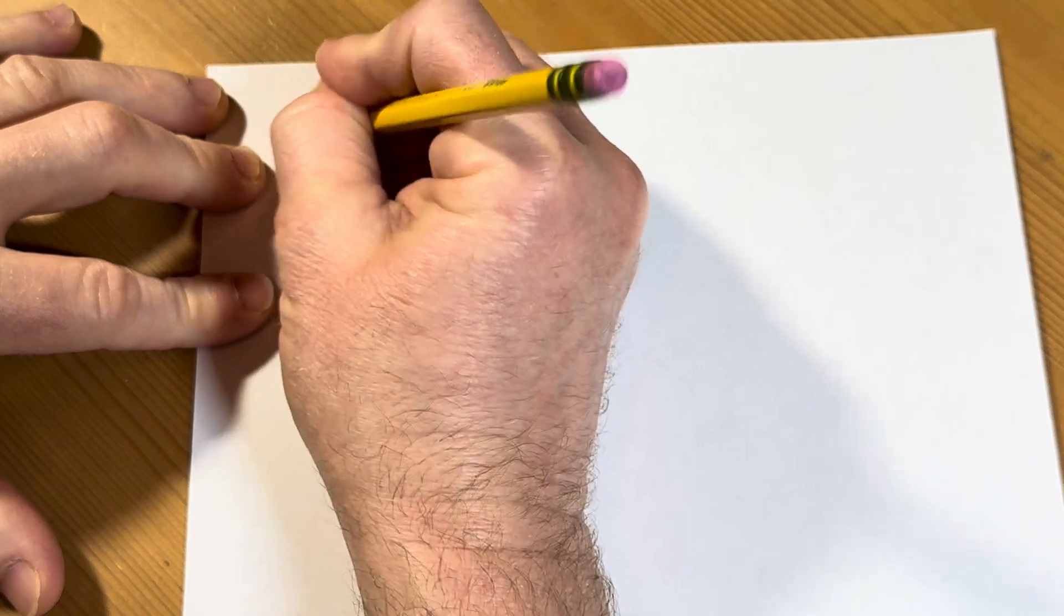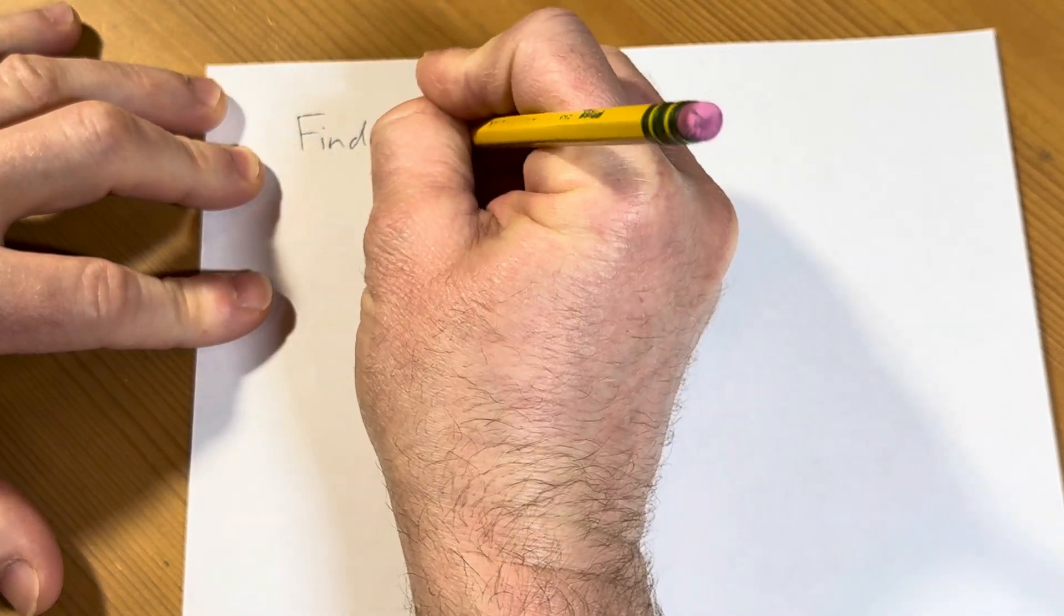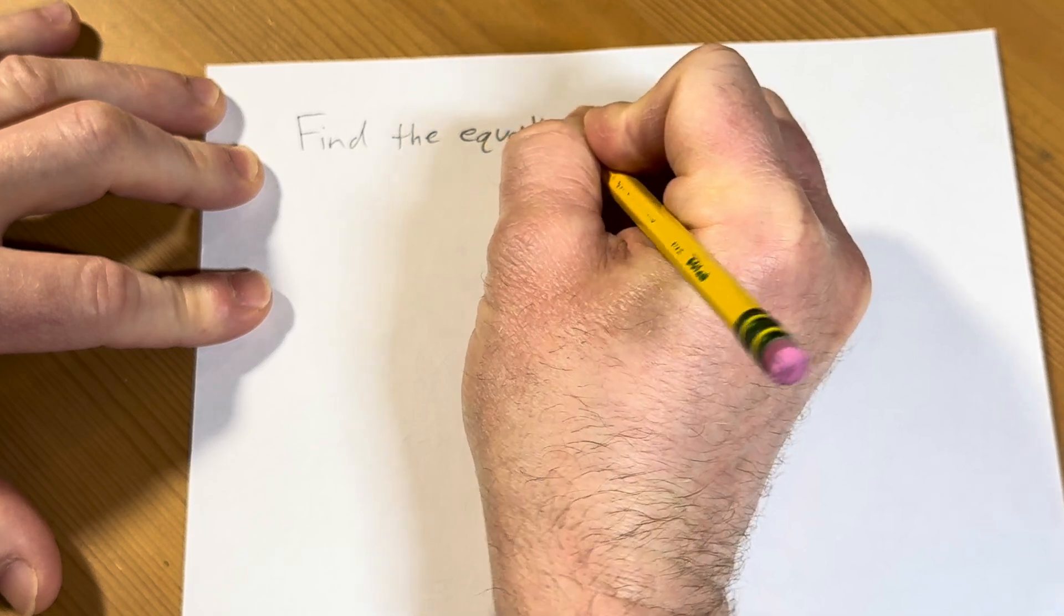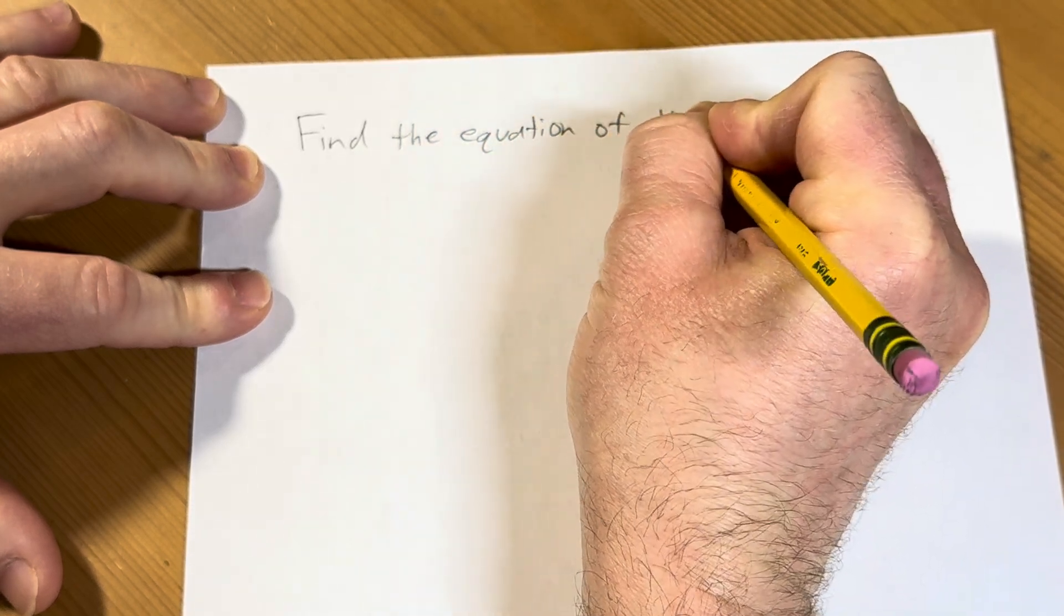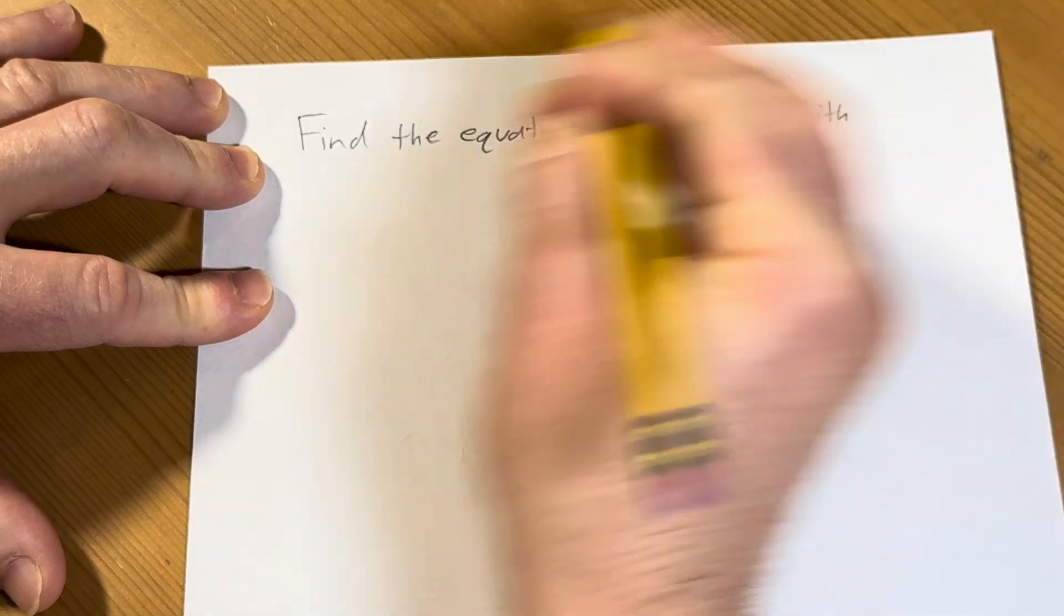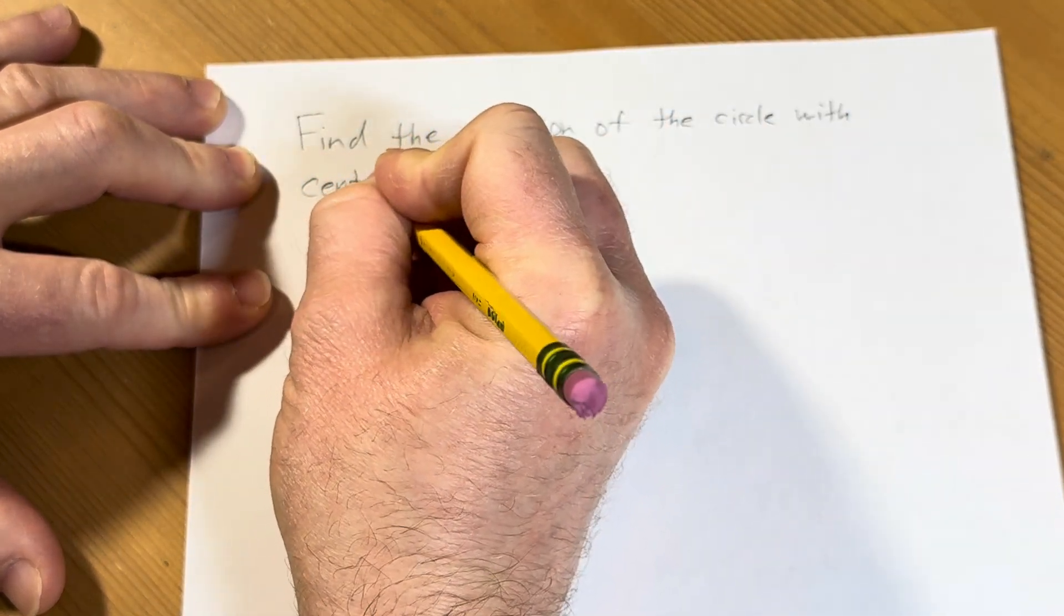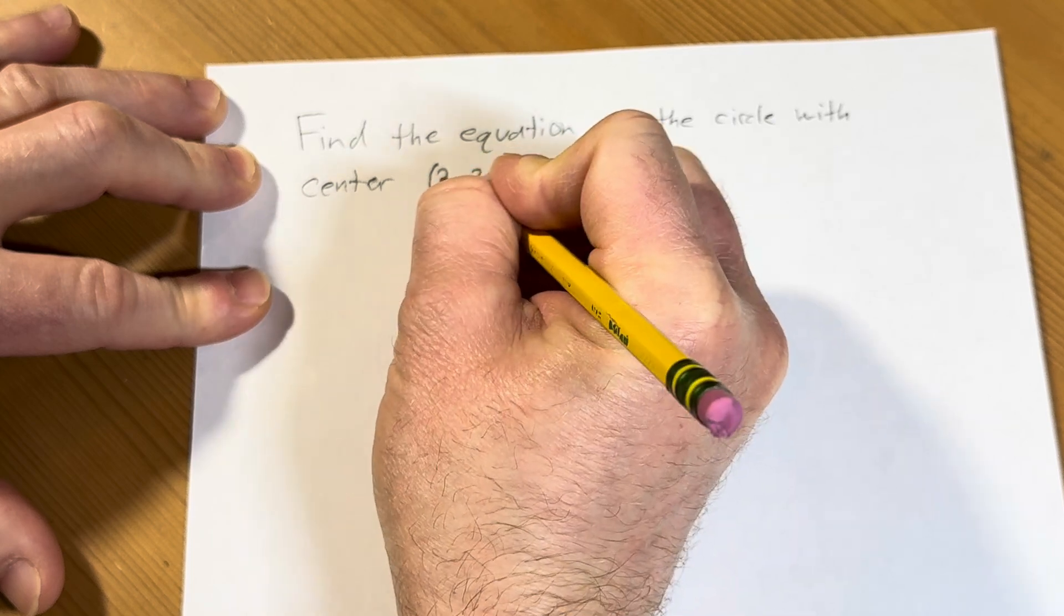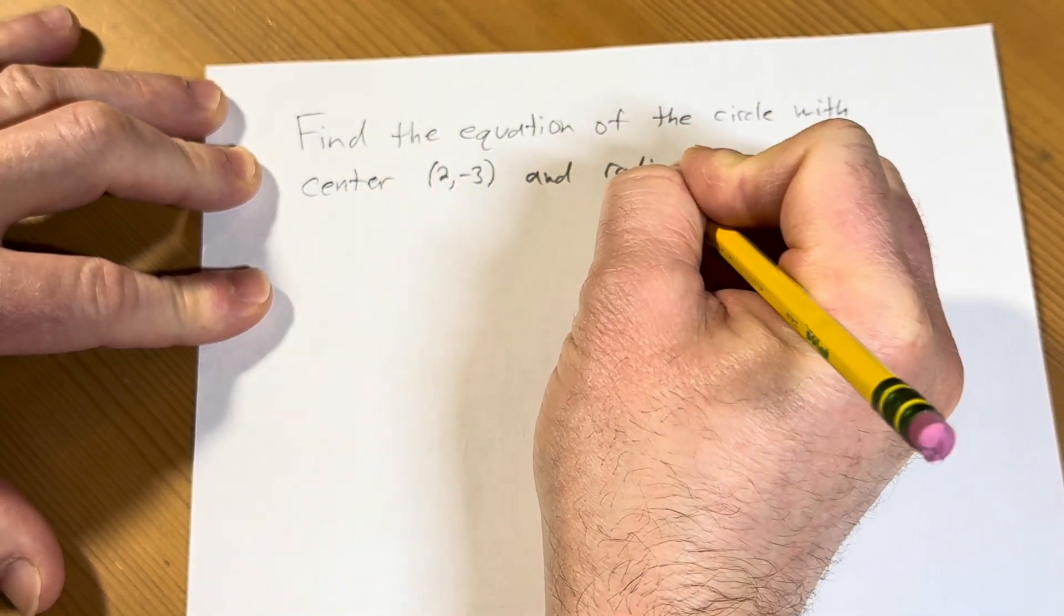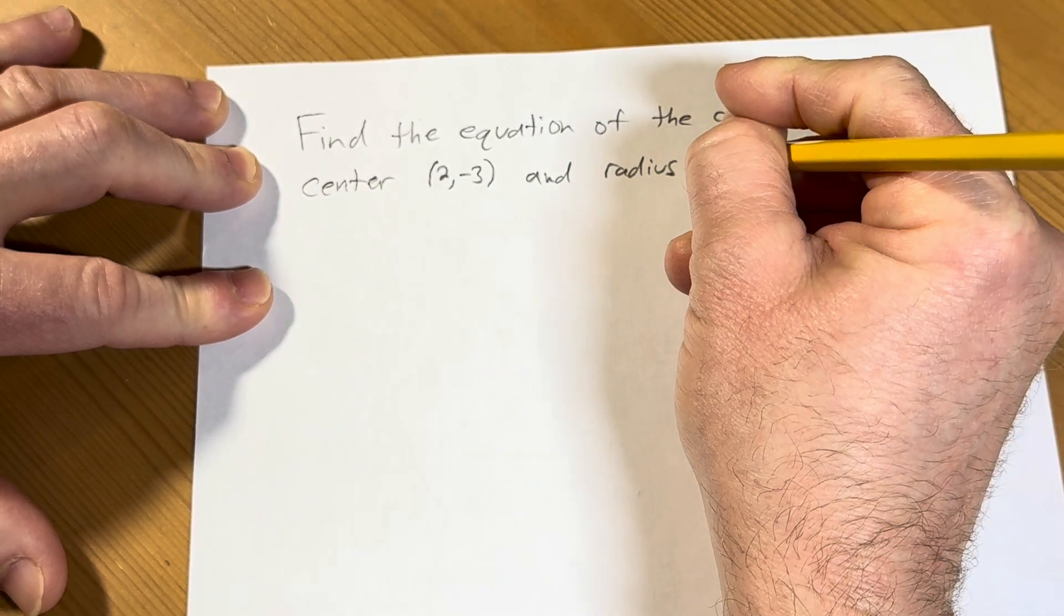The question is to find the equation of the circle with center (2, -3) and radius 4.